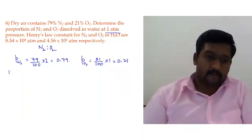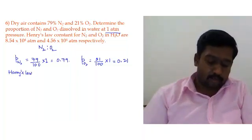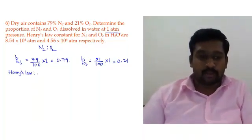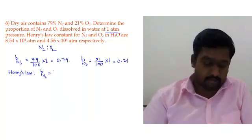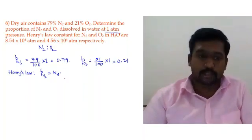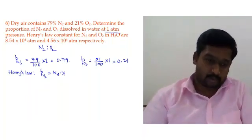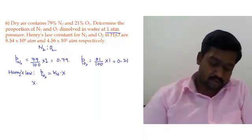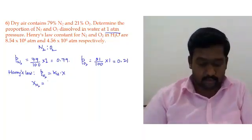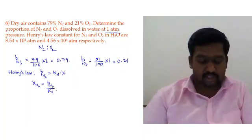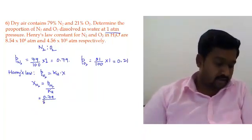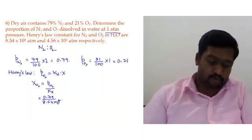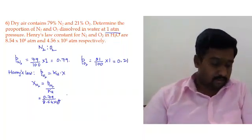Applying Henry's law: partial pressure = K_H × mole fraction. For nitrogen: mole fraction of N₂ = partial pressure of N₂ / K_H = 0.79 / (8.54 × 10⁴). This gives 9.25 × 10⁻⁶.